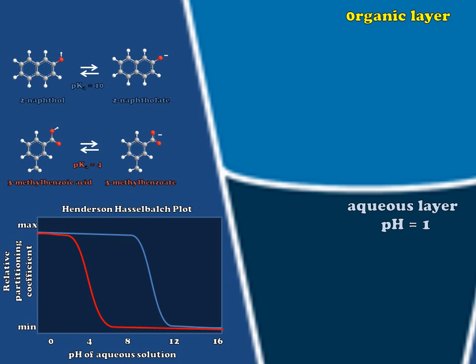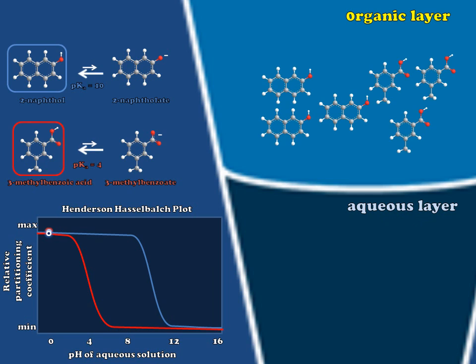If we begin by setting the aqueous layer to pH 1 and locate this position on our Henderson-Hasselbalch plot, what we notice is that both of the partitioning coefficients are at their highest point, meaning that both compounds are expected to be as soluble in the organic layer as possible. We're going to place our cartoon representations of our molecules in a position where the bulk of them will be collecting. So in this case, at pH 1, we'll have the naphthol and the benzoic acid all accumulated in the organic layer. Clearly, this is not an ideal situation if our goal is to separate the two in space from one another.